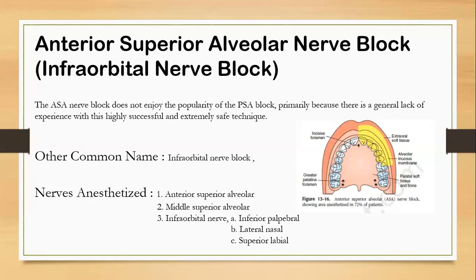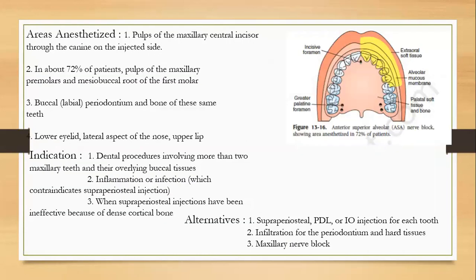The areas anesthetized for the anterior superior alveolar nerve block include the pulps of the maxillary central incisor through the canine on the injected side, from the central incisor to the premolar area, and the mesiobuccal root of the first molar — though in about 72% of patients, the pulps of the maxillary premolars and mesiobuccal root of the first molar are not involved. The buccal and labial periodontium and bone of those teeth, plus the lower eyelid, lateral aspect of the nose, and upper lip, are also anesthetized.